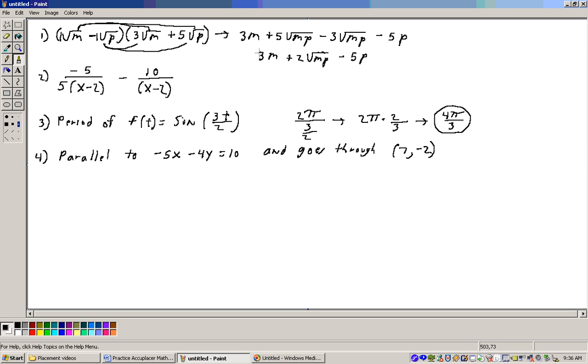Now at this point we get 3m. These are like terms. 5 of these minus 3 of these is 2 of these. So 3m plus 2 square root of mp minus 5p, and that's all the further we can go with that one.